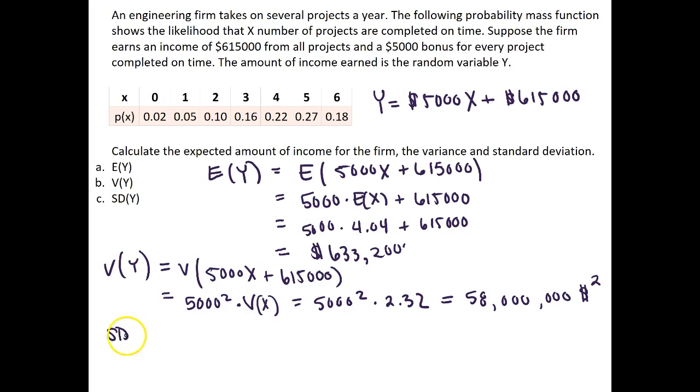So if we take the standard deviation of Y, this will be equal to the square root of the variance of Y, which we know to be 58 million. And so take the square root of 58 million and we get $7,615.77.